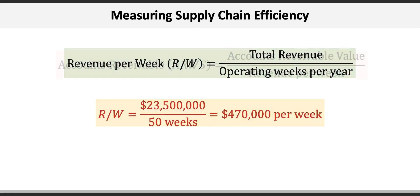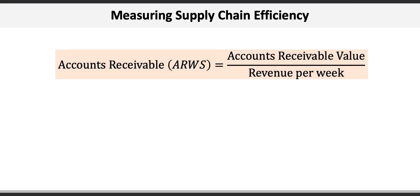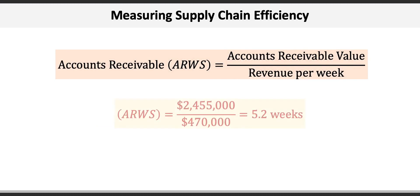The accounts receivable week supply formula is the accounts receivable value divided by the revenue per week. That's $2,455,000 accounts receivable divided by $470,000 revenue per week we just calculated, to get an ARWS of 5.2 weeks.